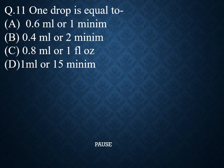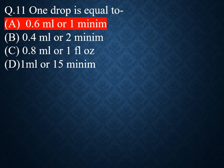Question 11. One drop is equal to. Option A: 0.06 mL or 1 minim. Option B: 0.04 mL or 2 minim. Option C: 0.08 mL or 1 fluid ounce. Option D: 1 mL or 15 minim. And the right answer is Option A: 0.06 mL or 1 minim. So one drop equals 0.06 mL or 1 minim.